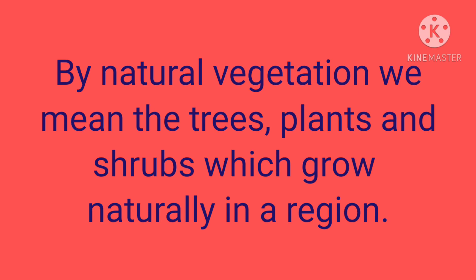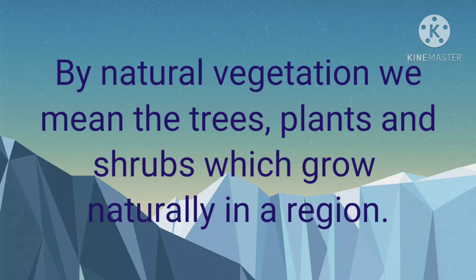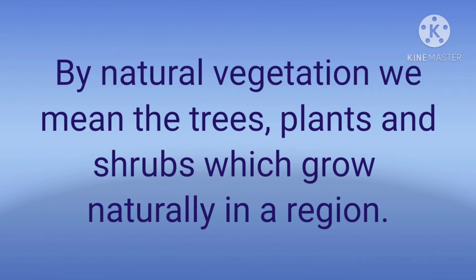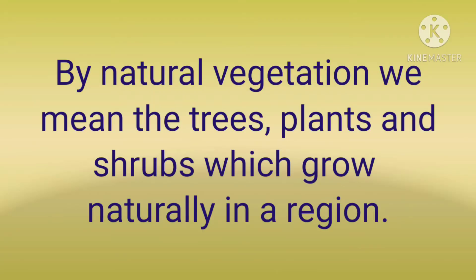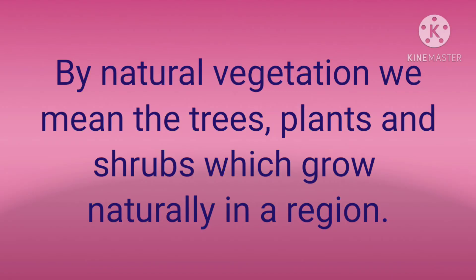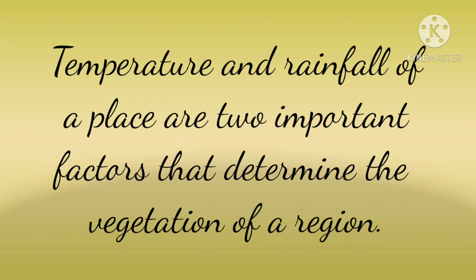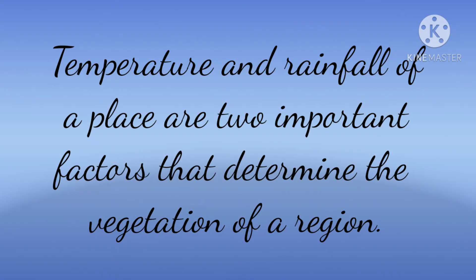So let us see what is Natural Vegetation. By Natural Vegetation, we mean the trees, plants and shrubs that grow naturally in a region. Natural Vegetation does not include a garden or a man-made park. Temperature and rainfall of a place are two important factors that determine the vegetation of a region.